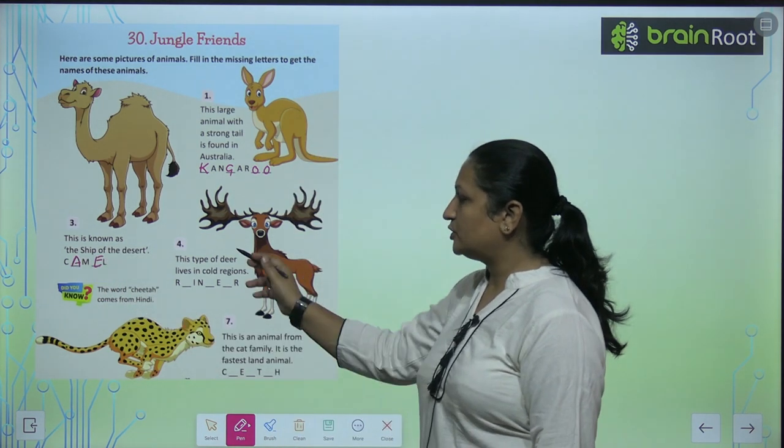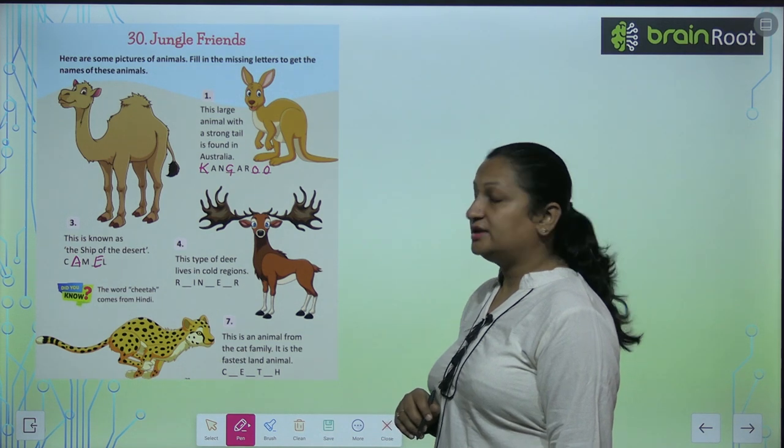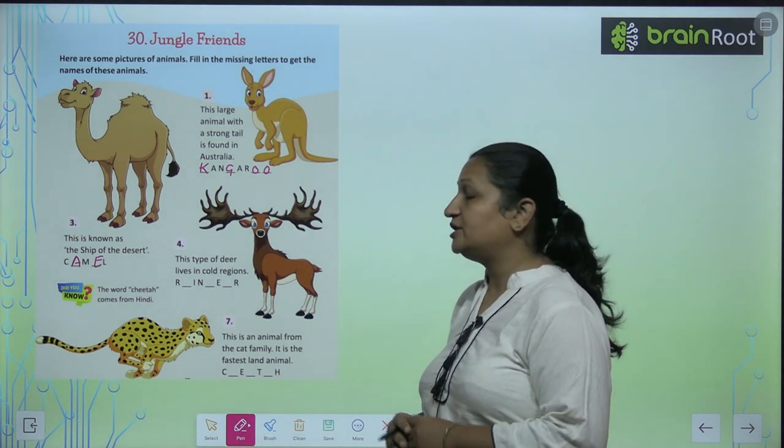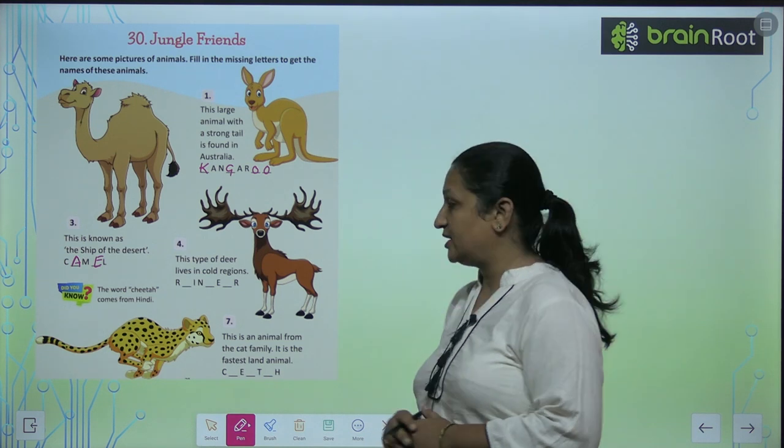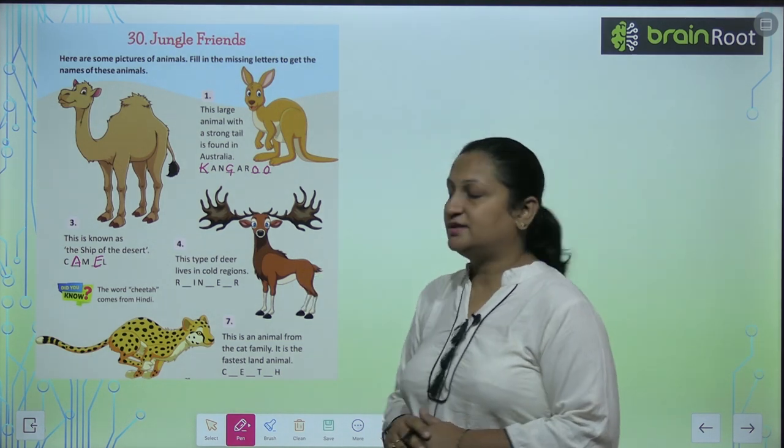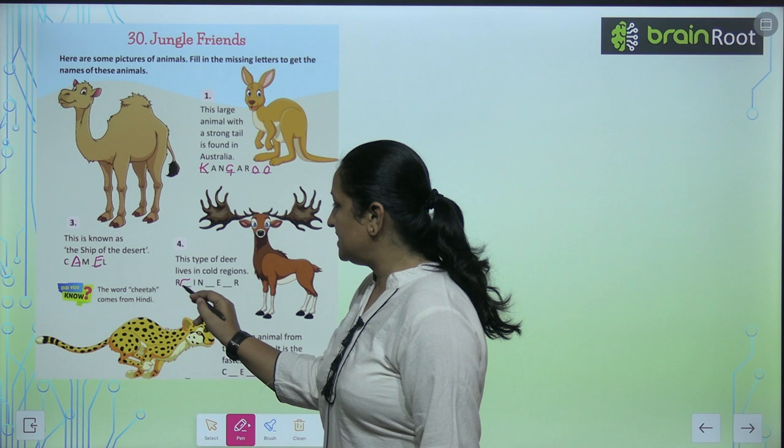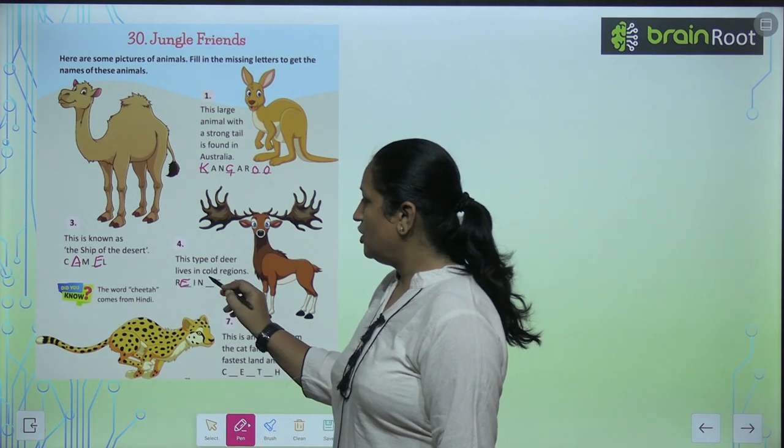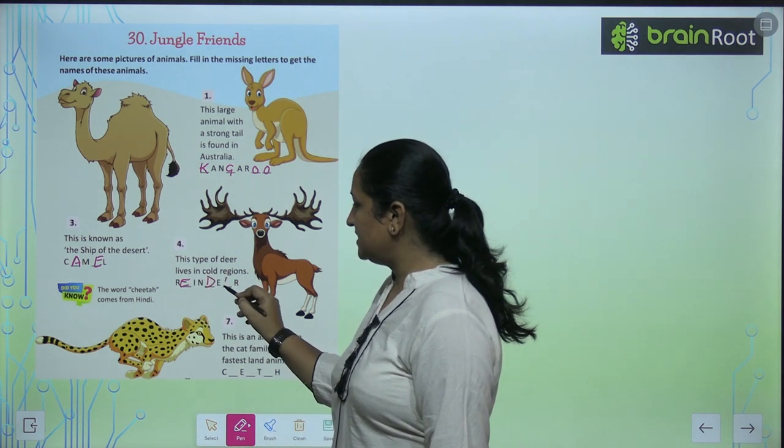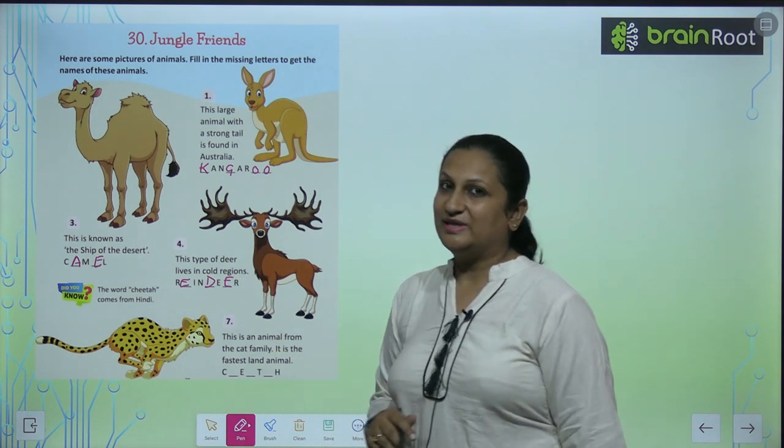Now see the fourth one. This type of deer lives in cold regions. These are found in very cold places. Their name is reindeer. So this is E, here is your E, R here, then D and E. This is our complete spelling.